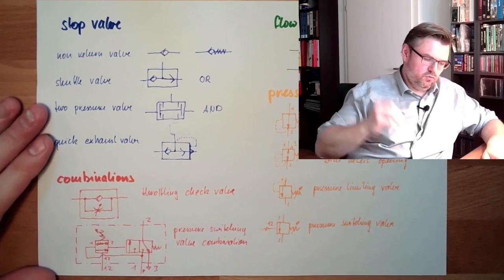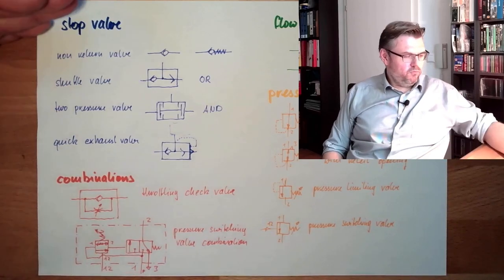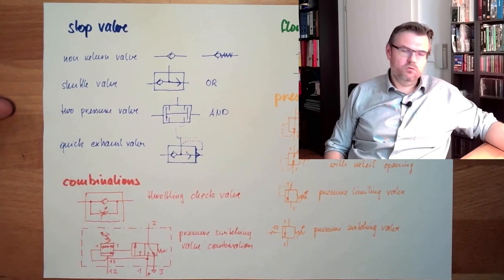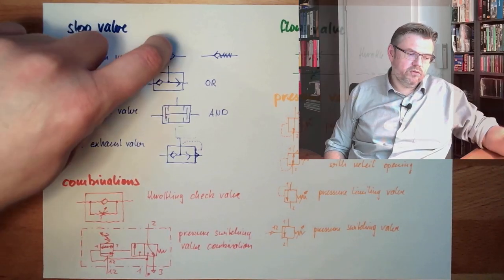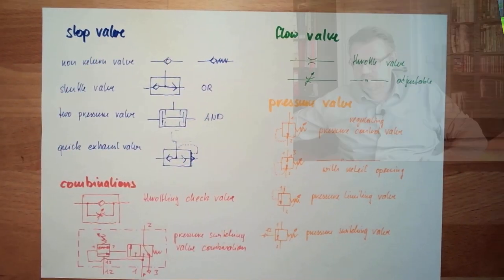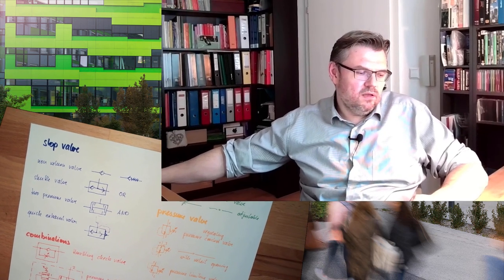So these are stop valves, flow valves, pressure valves, and their combinations. They are used to build logic, keep things separated with non-return valves, adjust speeds with flow valves, and limit or control pressures. Next time we are going to talk about a different type of valve designs — poppet valves and sliding valves — and what the difference is. Thank you very much for listening, goodbye.